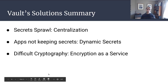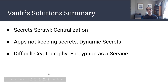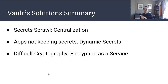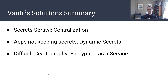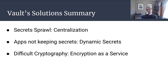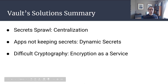To summarize: the three key challenges and Vault's three solutions. First, secret sprawl — solved by centralizing secrets into a Vault server. Second, applications are terrible at keeping secrets — solved with dynamic secrets that are ephemeral and easy to rotate. Third, the difficulty around cryptography — solved by offering encryption as a service with Vault.